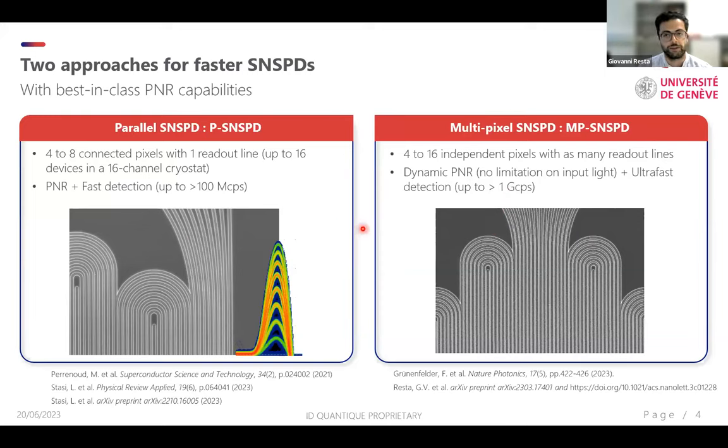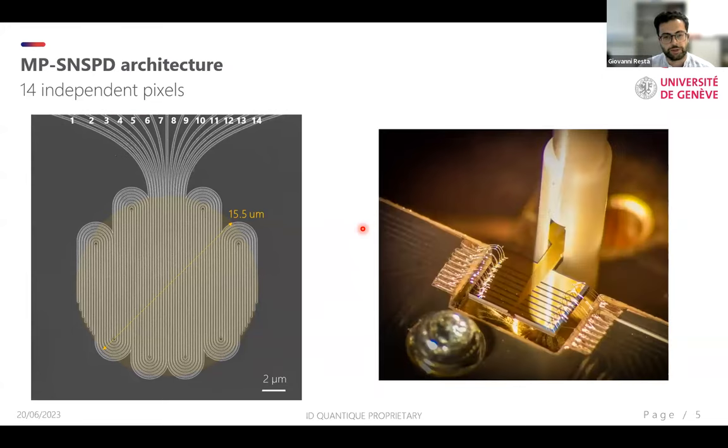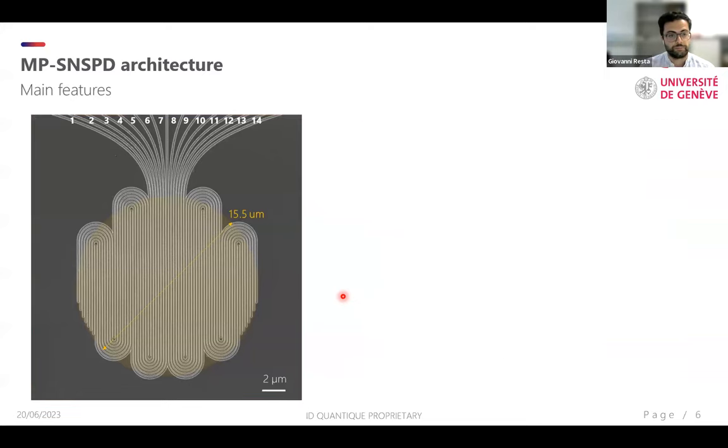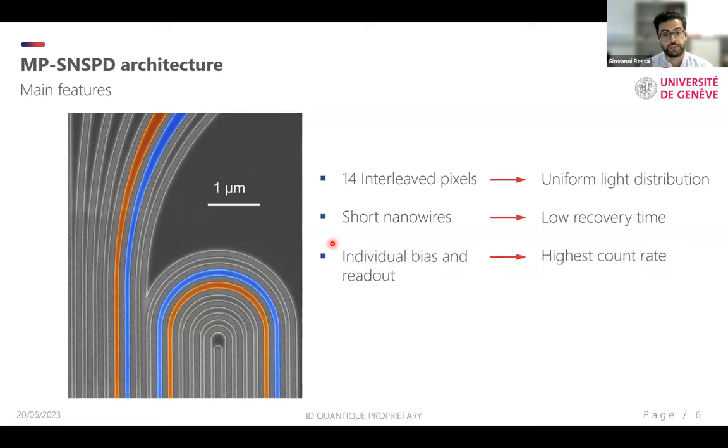We have developed parallel SNSPDs, which we refer to as P-SNSPD, where four to eight pixels are connected in parallel in one readout line. These detectors are able to count up to around 100 megacounts per second, and they also enable photon number resolving information. We also developed multipixel SNSPDs, which we refer to as MP-SNSPD. These are composed by four to 16 pixels which are independently biased and read out. This type of detector enables us to count above one gigacount per second and also enables dynamic PNR. Here I focus mostly on MP-SNSPD, but I will also show you how the P-SNSPD made their way to the quantum key distribution experiment. Here is a SEM image of the device that we fabricated. You can see there are 14 independent pixels. Once it's wire bonded to the PCB and placed at 0.8 Kelvin, you can find the detector right in the middle of the fiber sleeve, perfectly coupled to the core of a single mode fiber. If you zoom in a little bit, we can find the main features of the detectors. We have 14 interleaved pixels which are arranged in this interleaved geometry to guarantee a uniform light distribution. The nanowires are much shorter than a single pixel SNSPD would be, and this allows for a much faster recovery time. The nanowires are biased and read out individually to achieve the highest count rate.